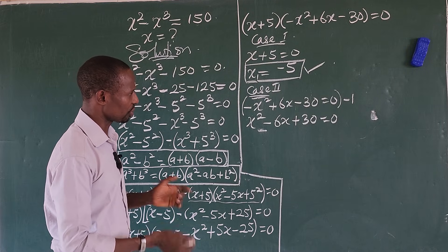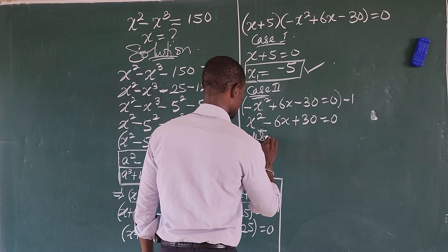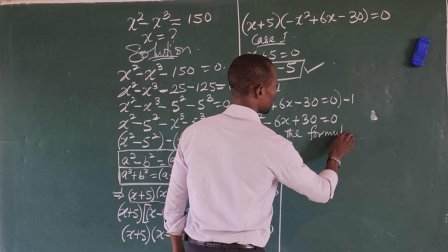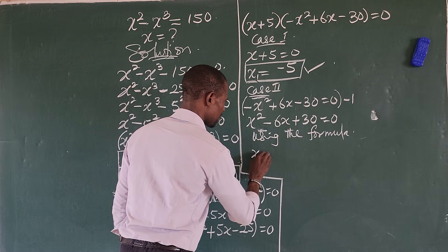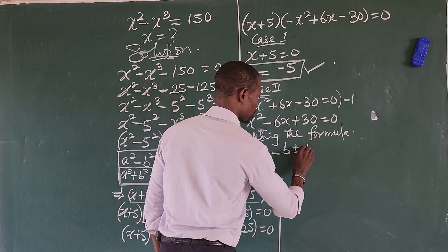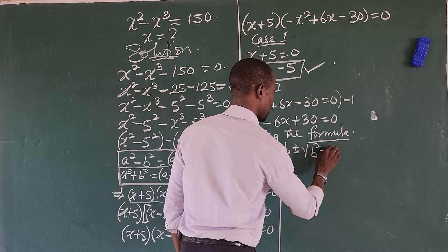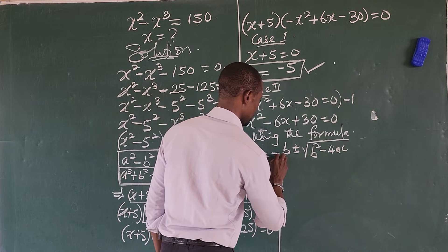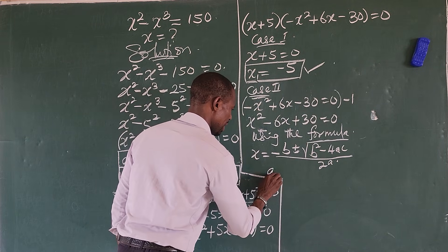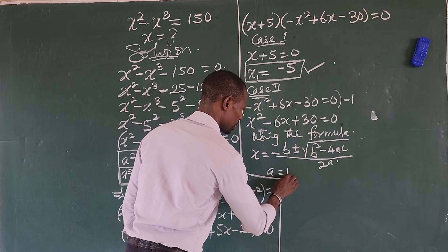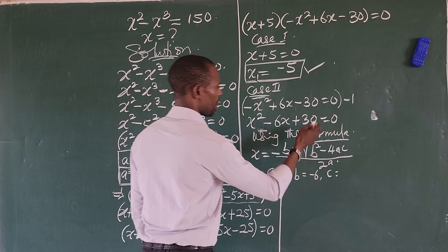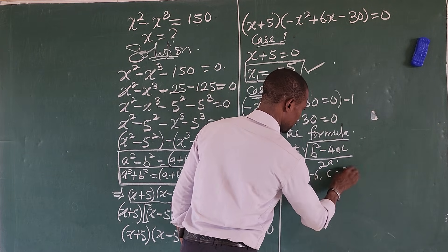I want to use the formula method. So using the quadratic formula, x equals minus b plus or minus the square root of b squared minus 4ac, all over 2a. What is our a? a is the coefficient which is 1, b is minus 6, and c is positive 30.